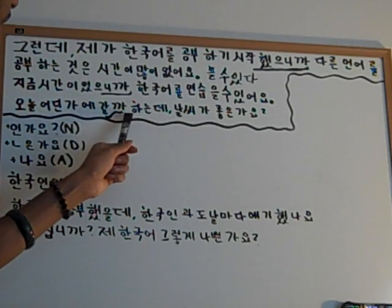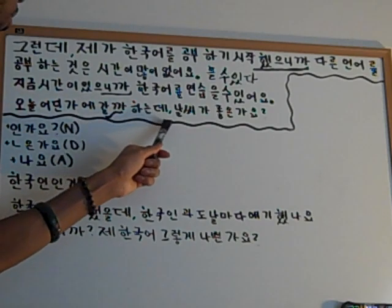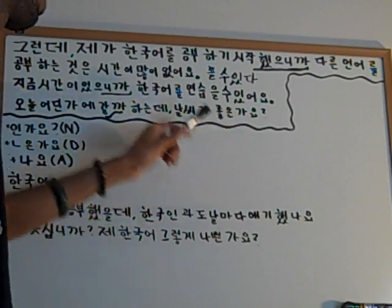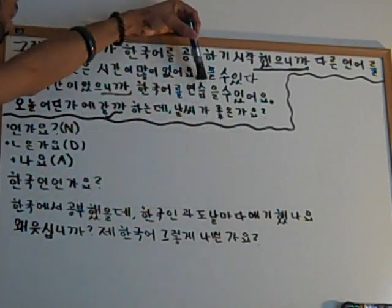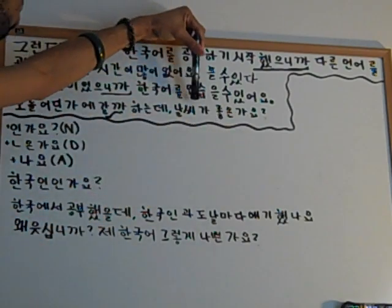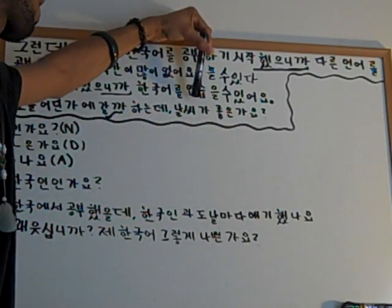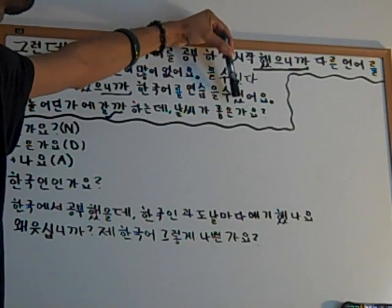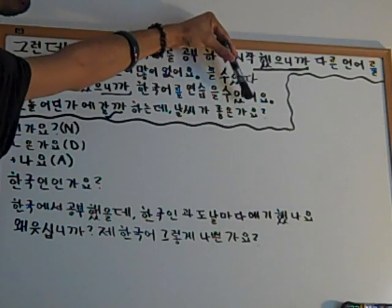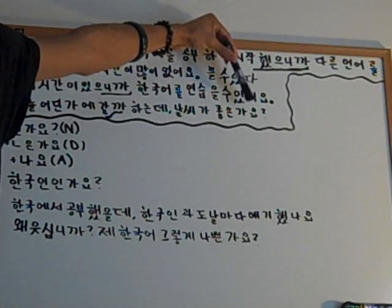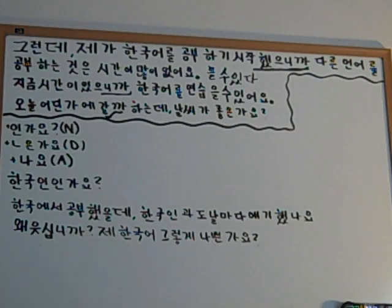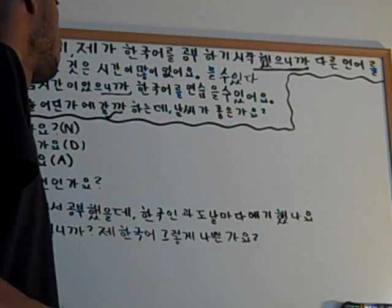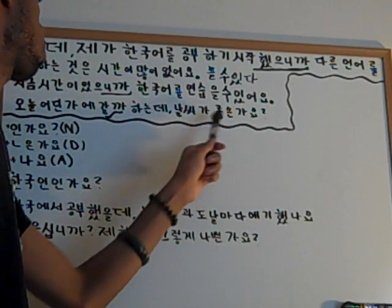하는데 — thinking about going, but. Then 날씨가 좋은가요? — 날씨 is 'weather,' so 날씨가 좋은가요 means 'Is the weather good?' The 가요 ending is asking a question. So 좋은가요 — is it good?